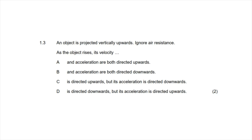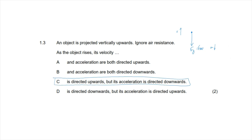Question 1.3: An object is projected vertically upwards; ignore air resistance. As the object rises, gravity is the only force acting on it, directed downward. The object starts with an initial velocity upwards, so it moves upward while the net force and acceleration are directed downward. The correct answer is option C: the velocity is directed upwards but the acceleration is directed downwards.